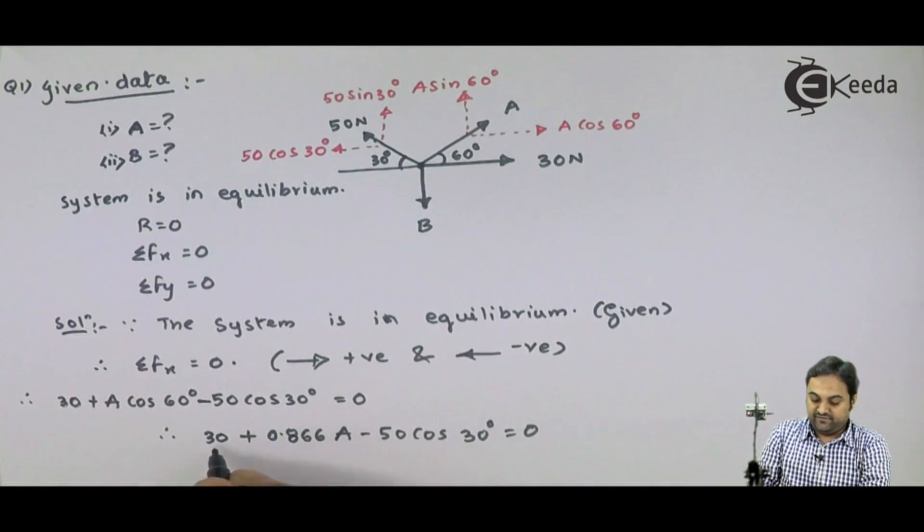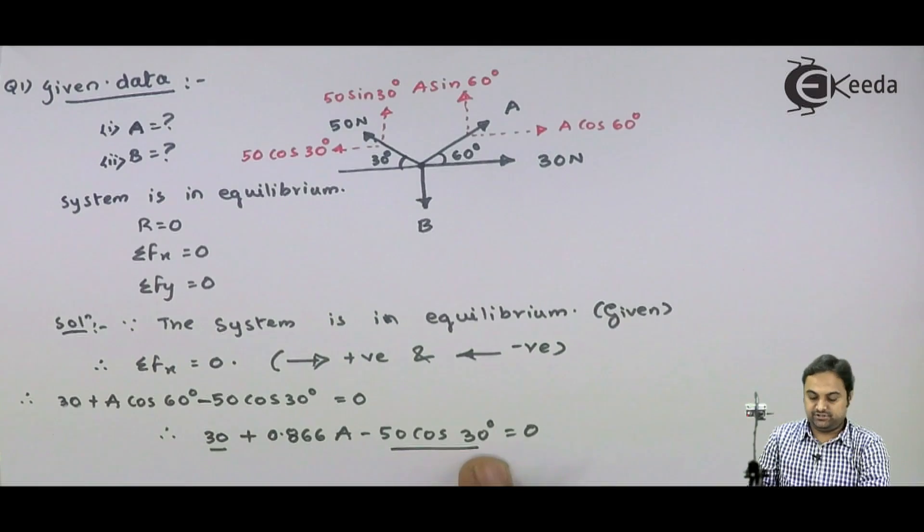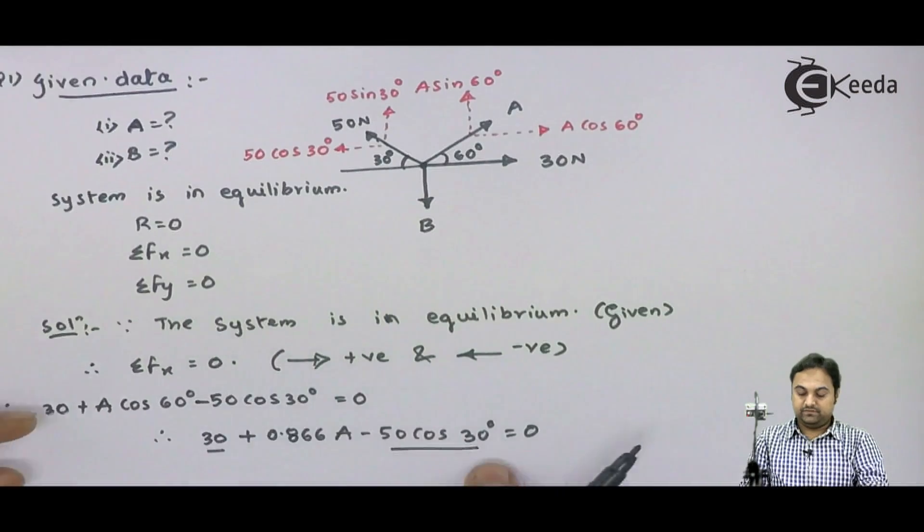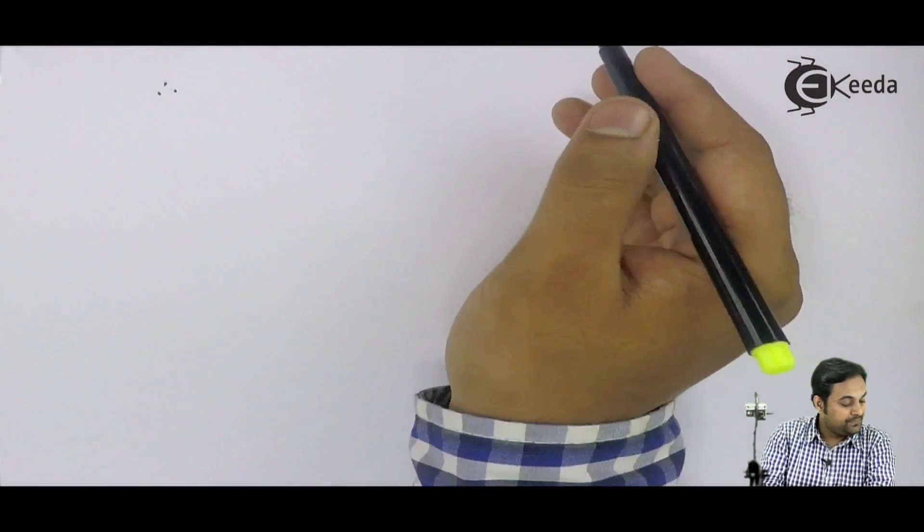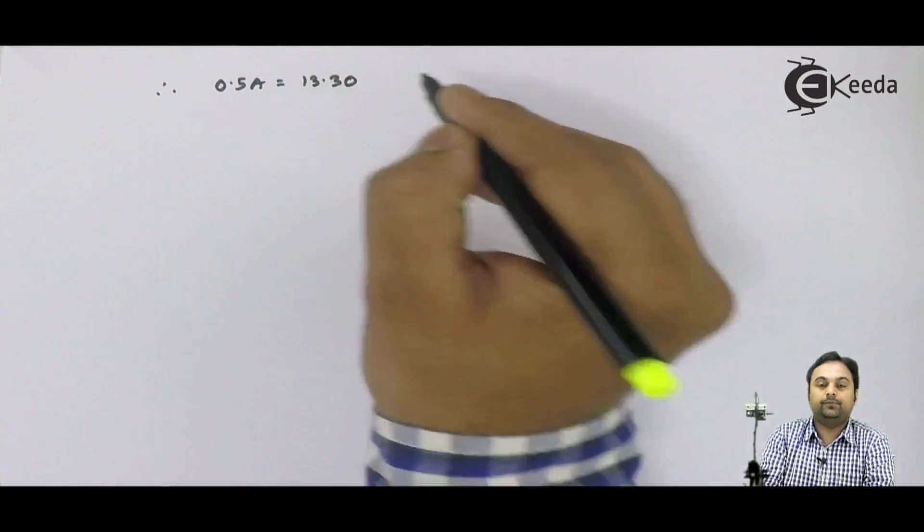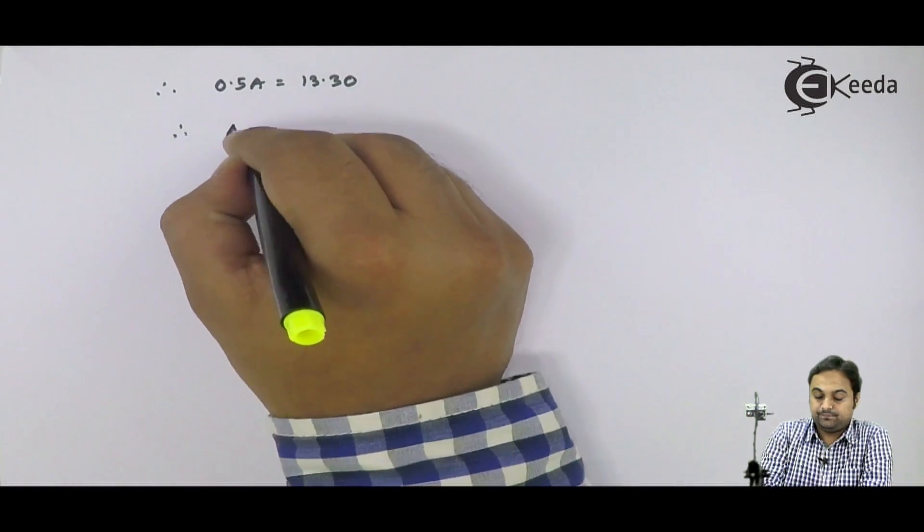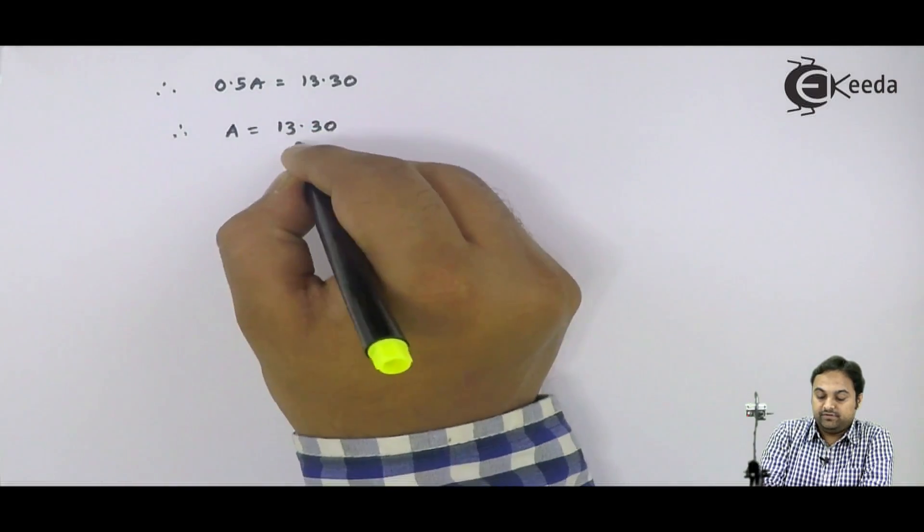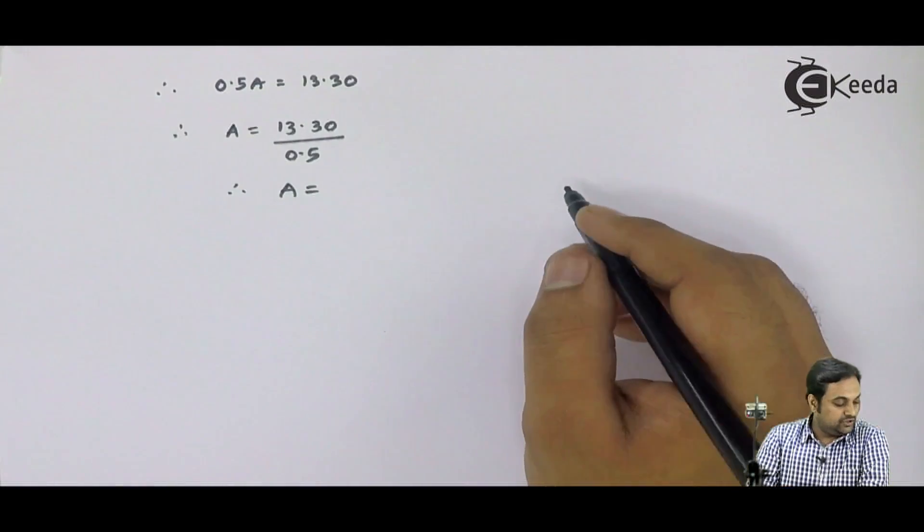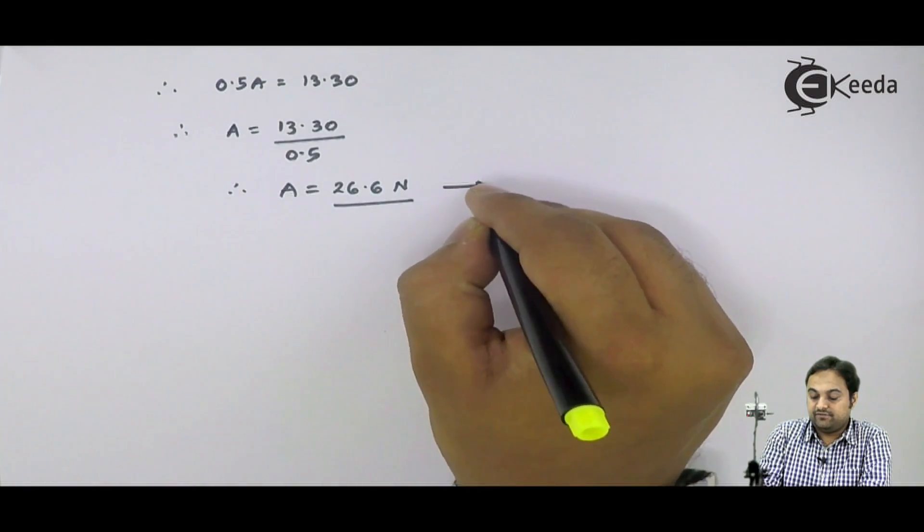Next, if I found out this, that is 30 minus 50 cos 30 and A, I would be simplifying this. It simplifies to, therefore, 0.5 A is equal to 13.30. Now I need to calculate the value of A. Hence A is equal to 13.30 divided by 0.5, and finally my answer of A comes out to be 26.6 Newton. This is my first answer.